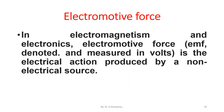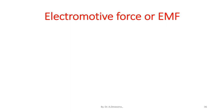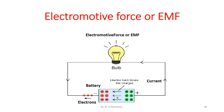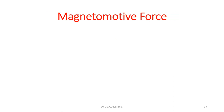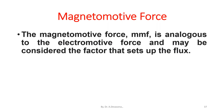In electromagnetism and electronics, electromotive force, that is EMF, denoted and measured in volts, is the electrical action produced by a non-electrical source. In this diagram, a bulb is connected across the battery and a current is flowing in the circuit. Due to the flow of current, the bulb glows — that is the electric field in the battery that drives the charges. The electrons moving in the circuit cause the current.